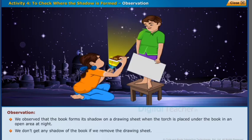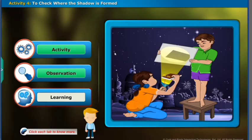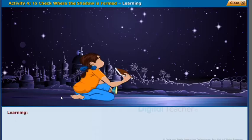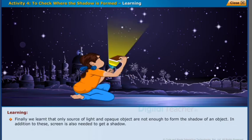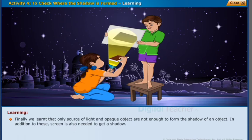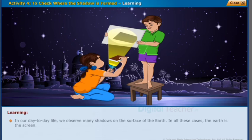We don't get any shadow of the book if we remove the drawing sheet. Finally, we learned that only a source of light and an opaque object are not enough to form the shadow of an object. In addition to these, a screen is also needed to get a shadow.